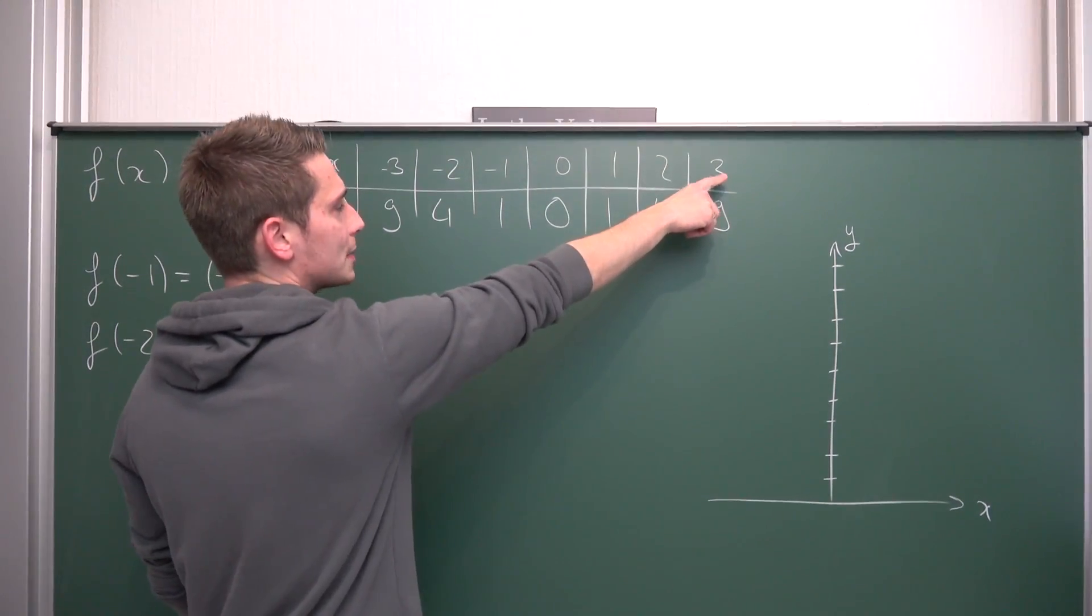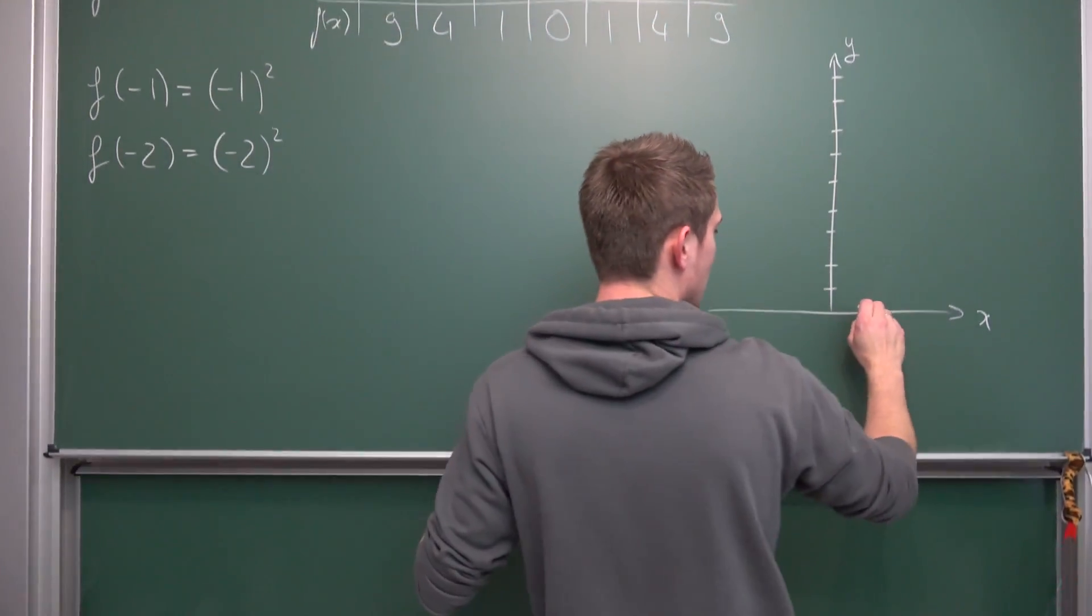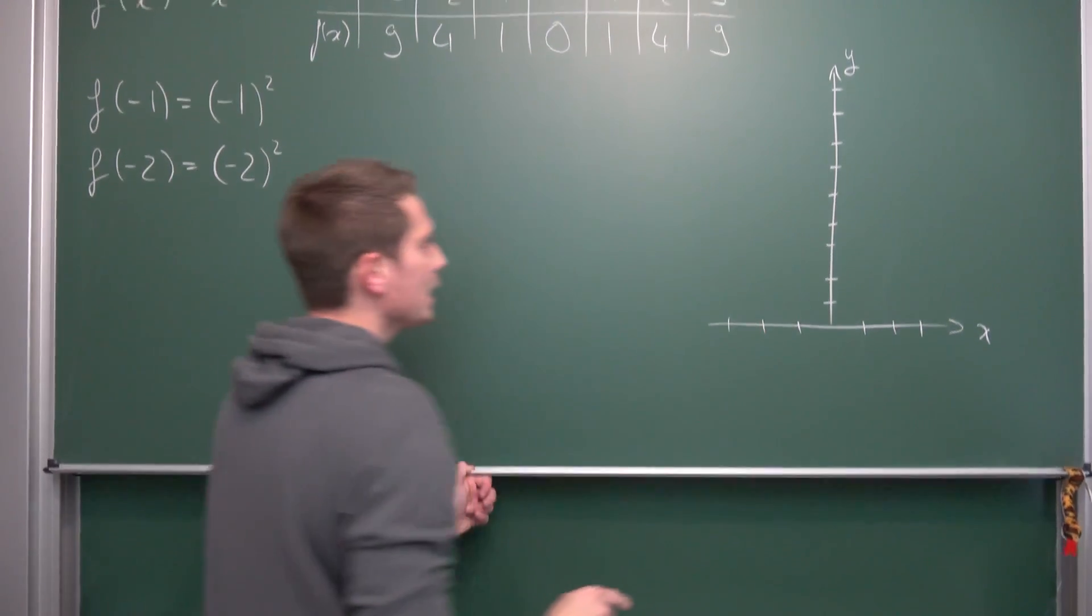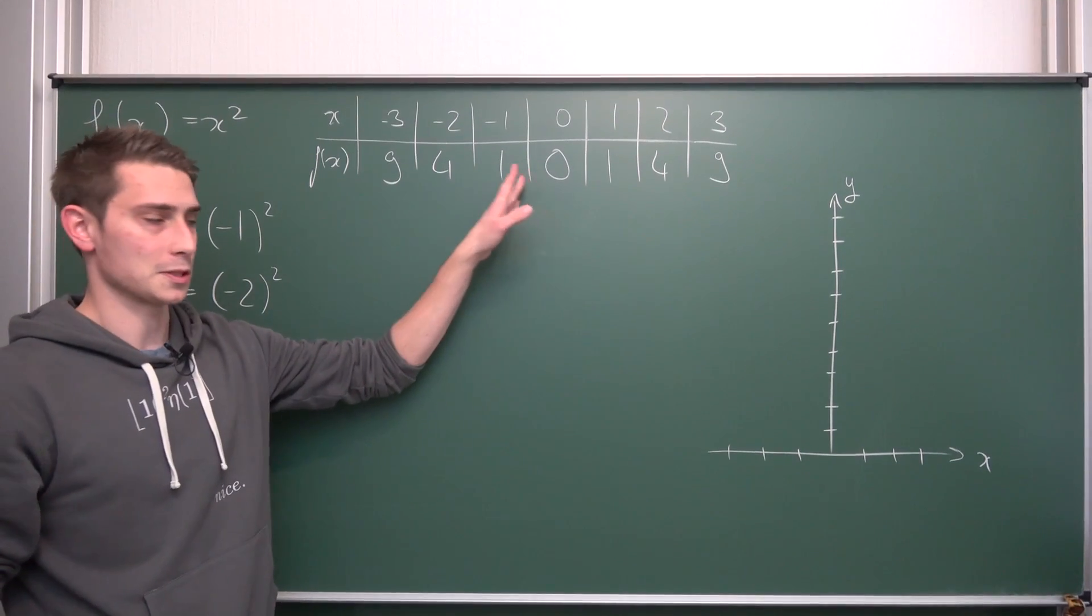And here we need it up until three and negative three on the x axis. Meaning, we are going to have one, two, three, and negative one, negative two, negative three. And now we are going to put all the points into here.